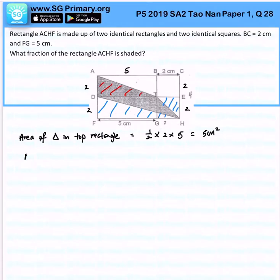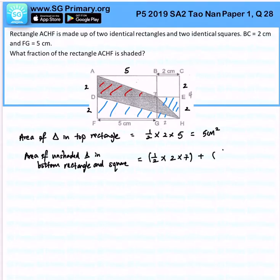Area of unshaded triangle in the bottom rectangle and square - that will be half times 2 times 7 plus half times 2 times 2, all together it will be 9cm².